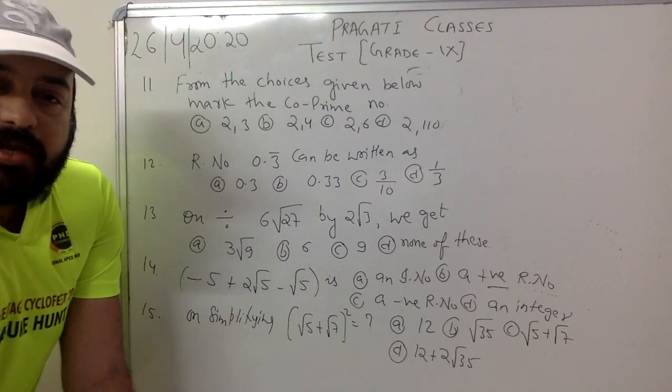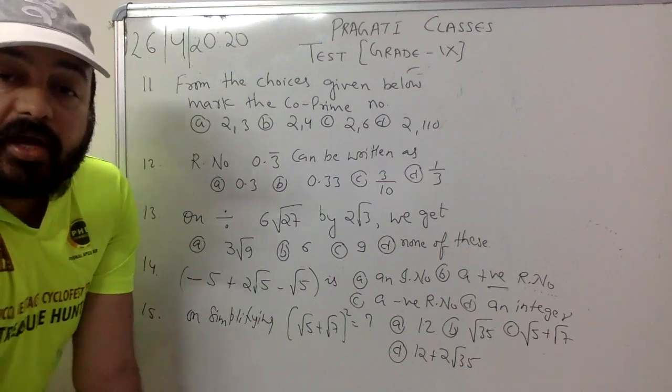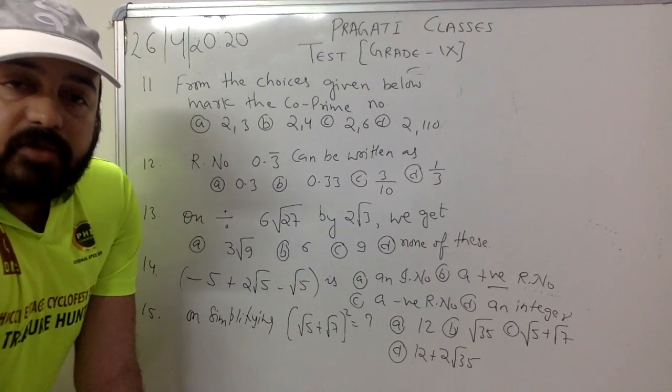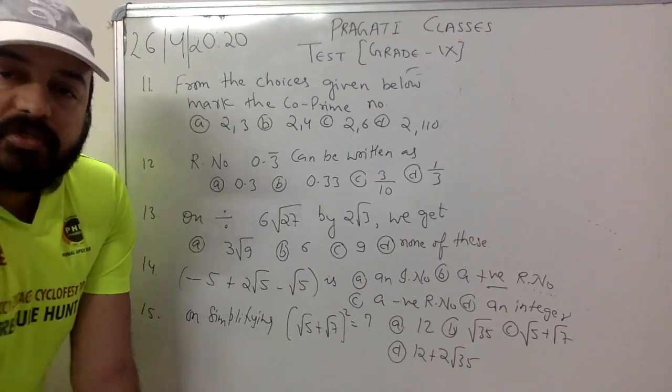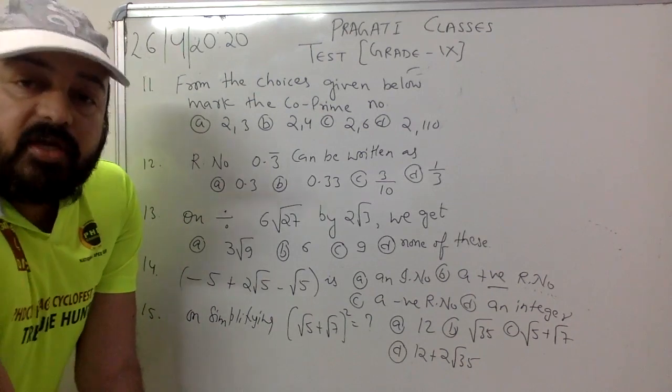Question number 12. Rational number 0.3 bar can be written as: option A 0.3, option B 0.33, option C 3 by 10, and option D 1 by 3.